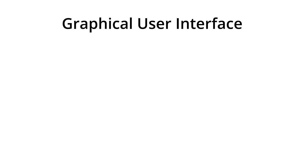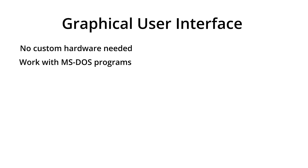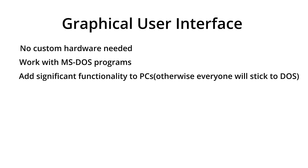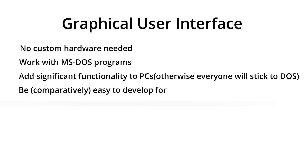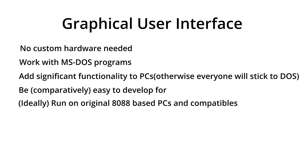What the market was looking for was a GUI that didn't require expensive custom hardware, worked with the rapidly expanding base of DOS programs — meaning it had to coexist with DOS — and also added significant functionality to IBM PCs and the nascent IBM-compatible market, while being comparatively easy to develop for. Additionally, given the vast amount of original IBM PCs with 8088 processors and far less than 640k of memory, a GUI that could run on these lower-end machines would have a far larger market than one requiring a 286 or 386 processor. This was an incredibly difficult problem to solve, and over the next few years, multiple companies' attempts to meet these requirements were to fail miserably.